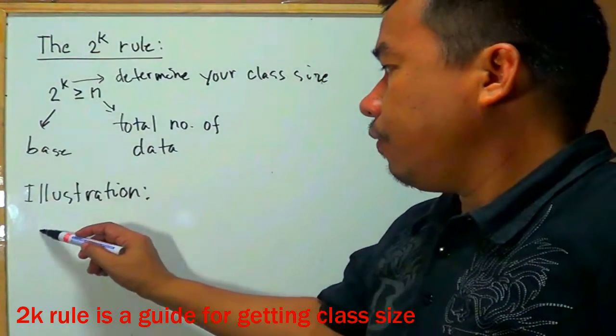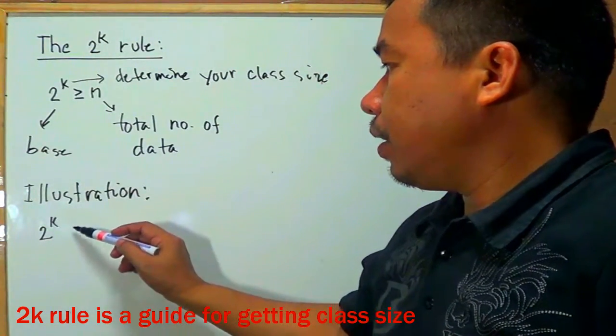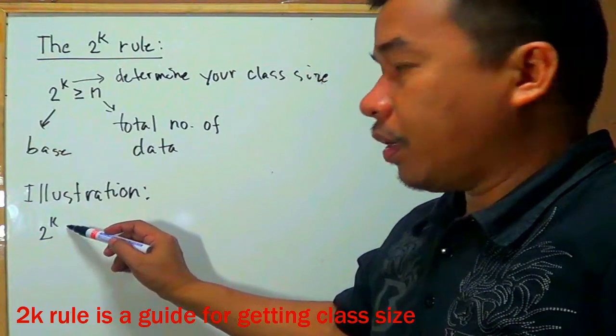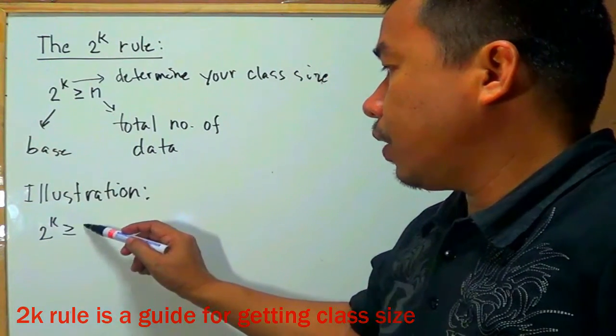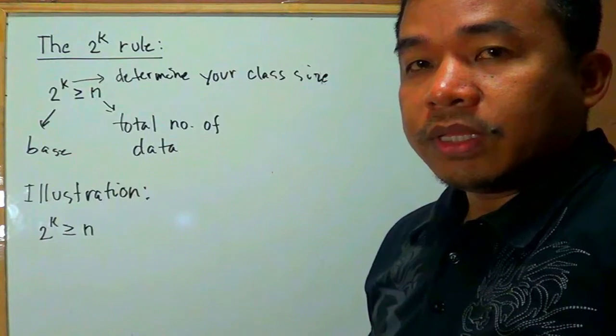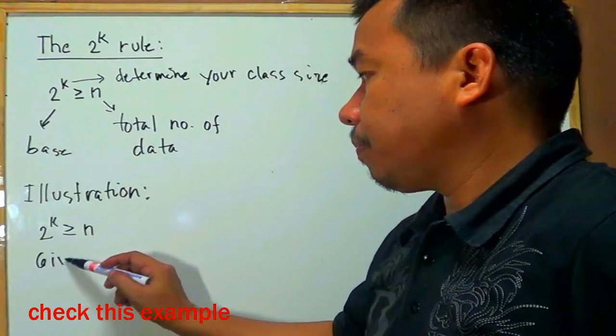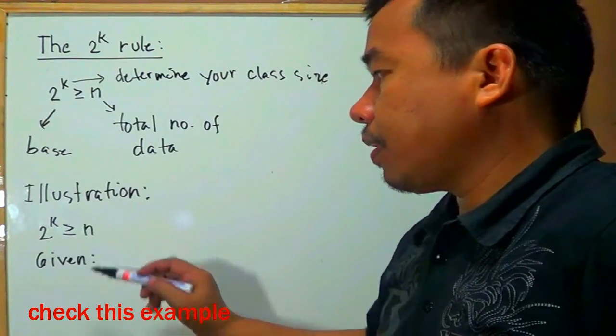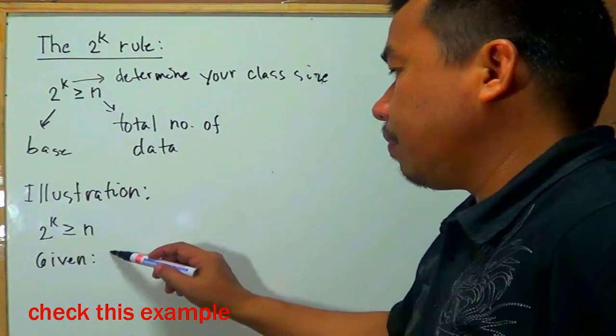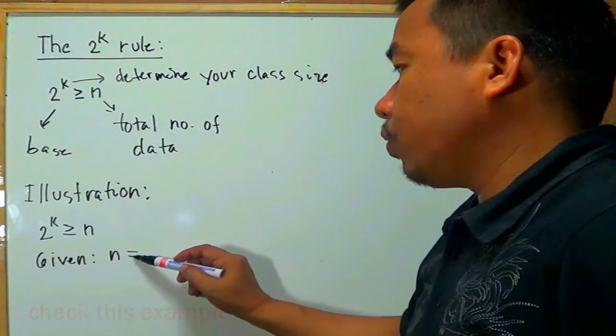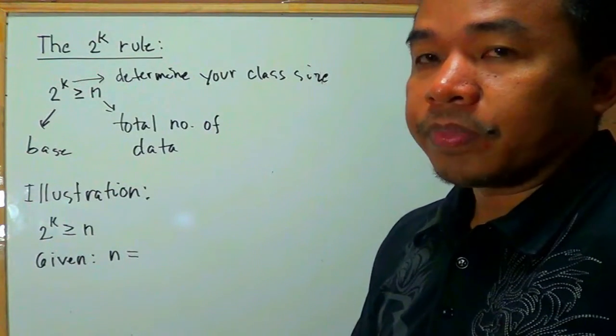We have here 2^k should be greater than or equal to n. So let us have an example for n, given that n is equal to, let's say, 20.